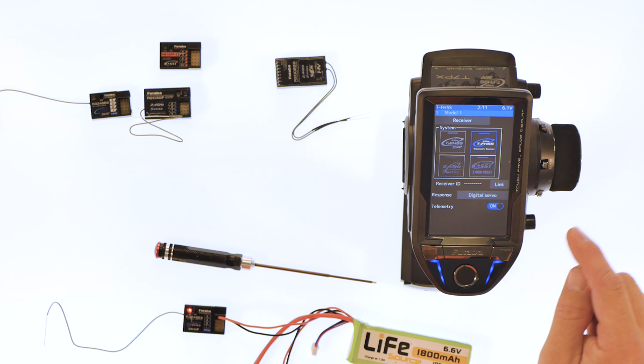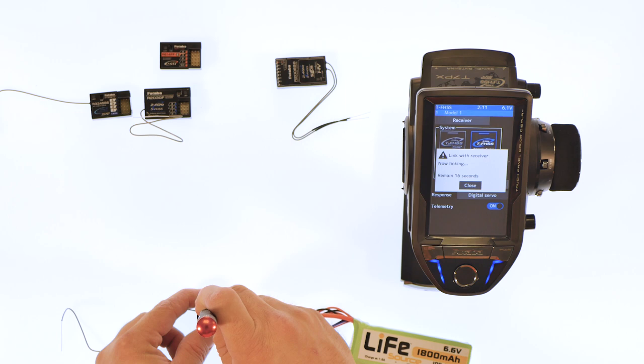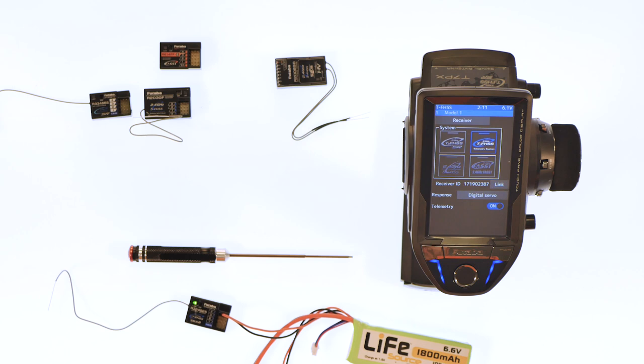We will plug it in. You're going to hit link. You have 20 seconds to link it. Once you're done hit close. You're ready to go. That's how easy it is to link your telemetry receiver to the transmitter.